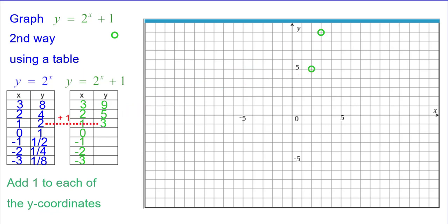2 plus 1 is 3, over 1 and up 3. 1 plus 1 is 2, so 0, 2.